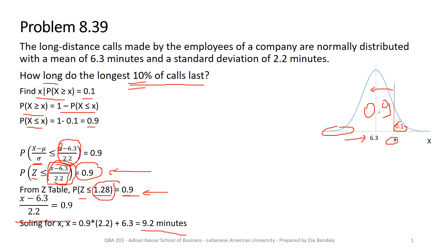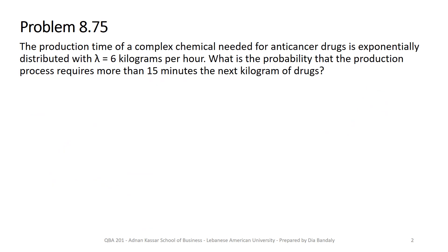So I hope this is understood. We encounter this type of problem often, and now I hope you are ready to answer such questions. This is problem 8.75 from our Keller textbook. The production time of a complex chemical needed for anti-cancer drugs is exponentially distributed with lambda of 6 kilograms per hour. What's the probability that the production process requires more than 15 minutes?